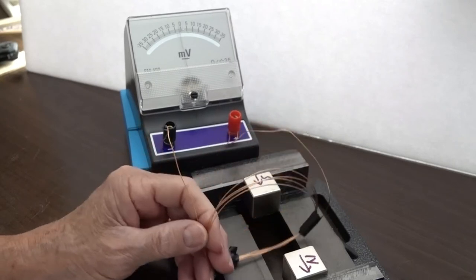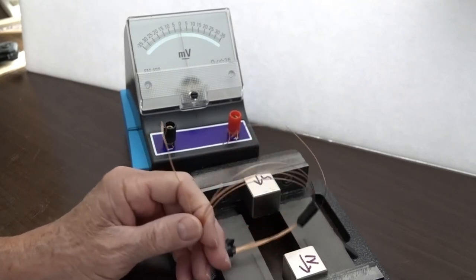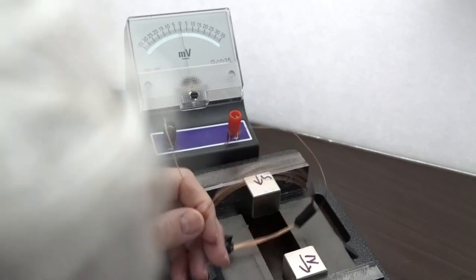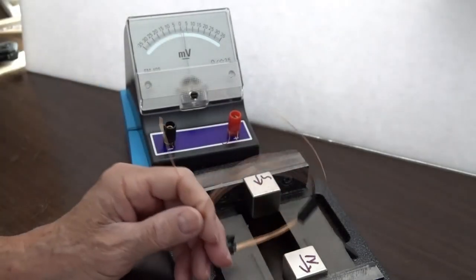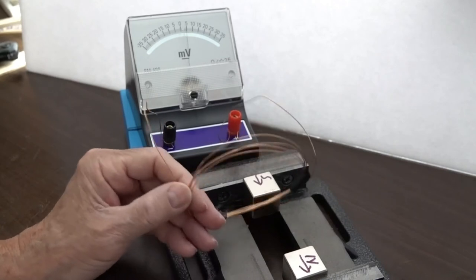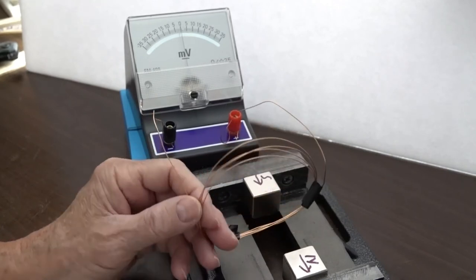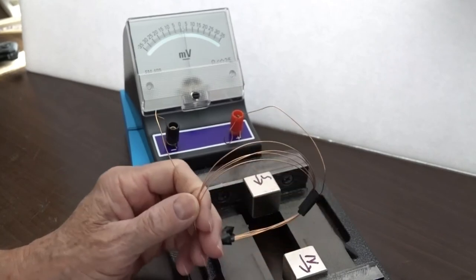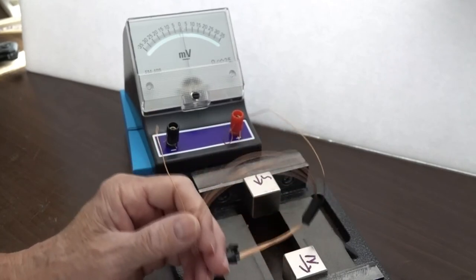When I do this in the middle, I get all it looks like about just a couple of millivolts. Now, if I move it closer to one of the magnets, the voltage is greater, indicating a non-uniform field in here. Greater intense field through here and here.